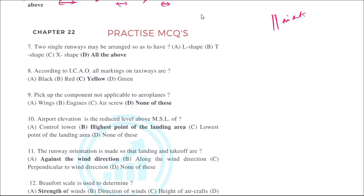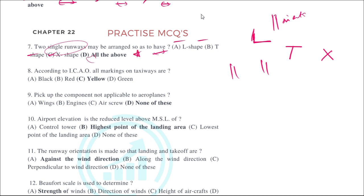When you have two single runways, they can be arranged in the L-shape, T-shape, or X-shape. All three arrangements are possible, so the answer is all of the above.